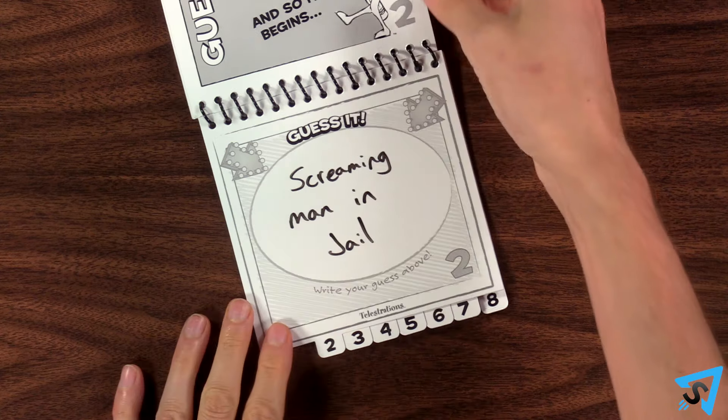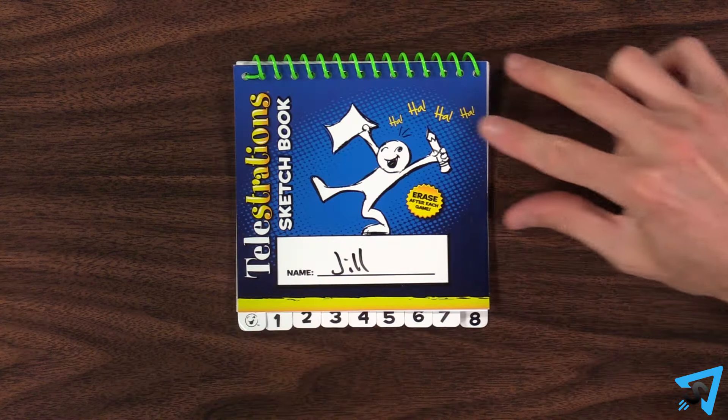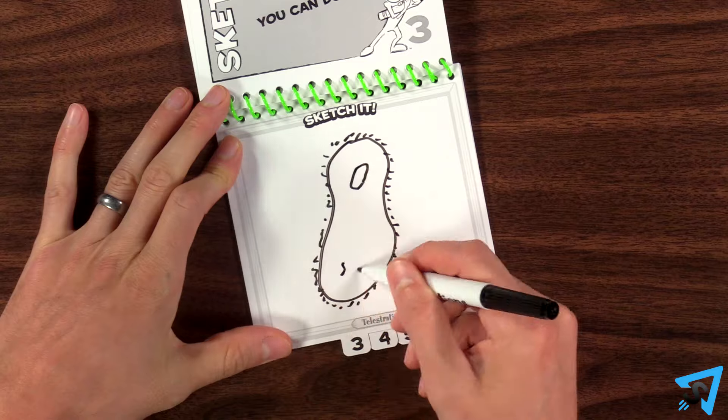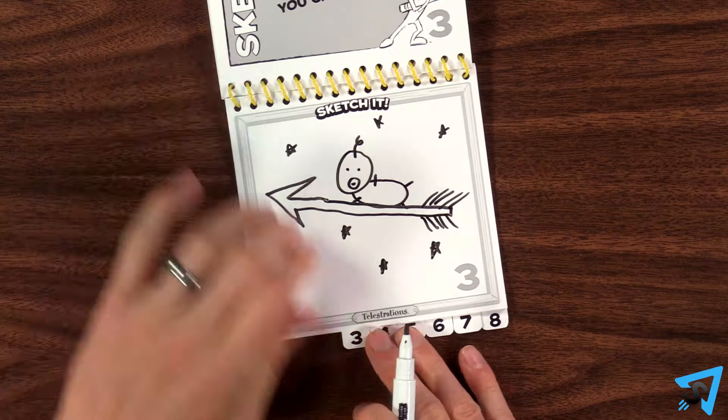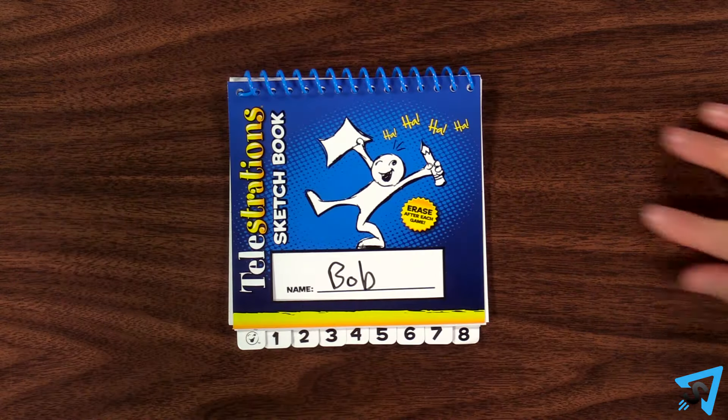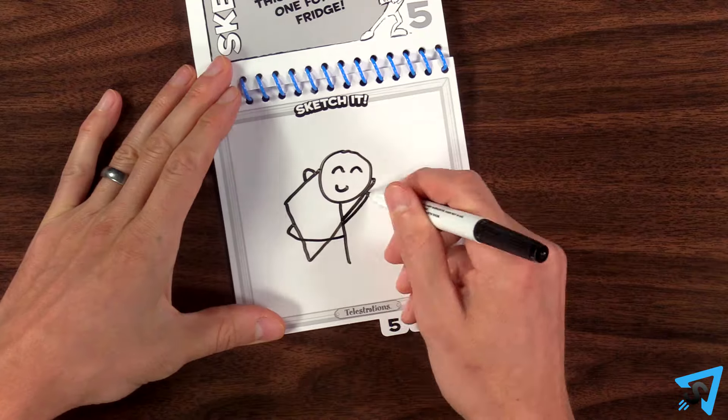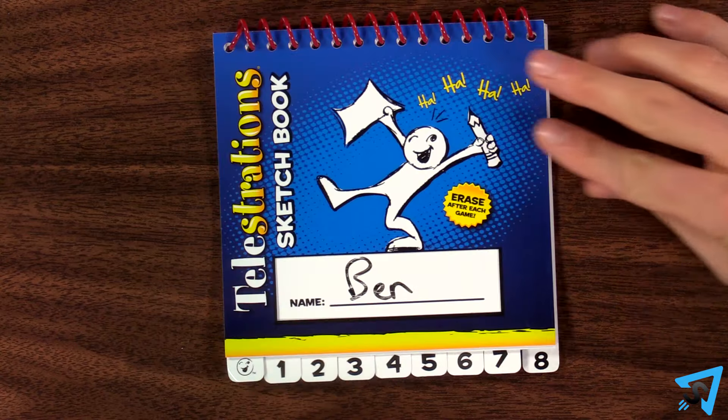Once everyone is finished, you pass to the left again and repeat the process of drawing, writing, drawing, until your original book makes it back to you.